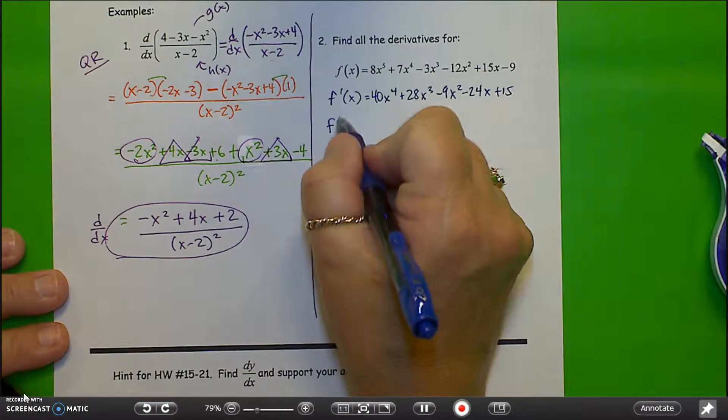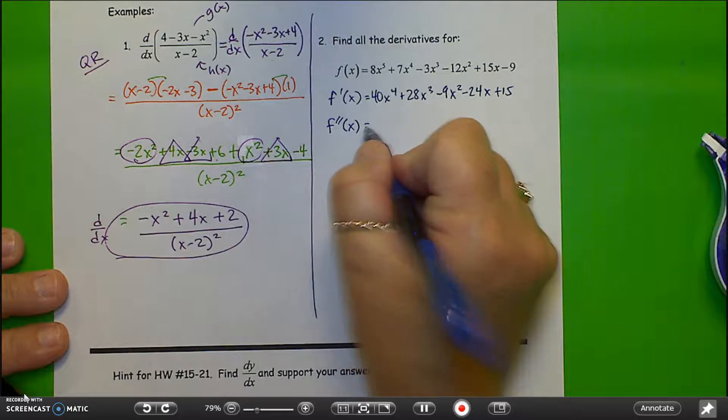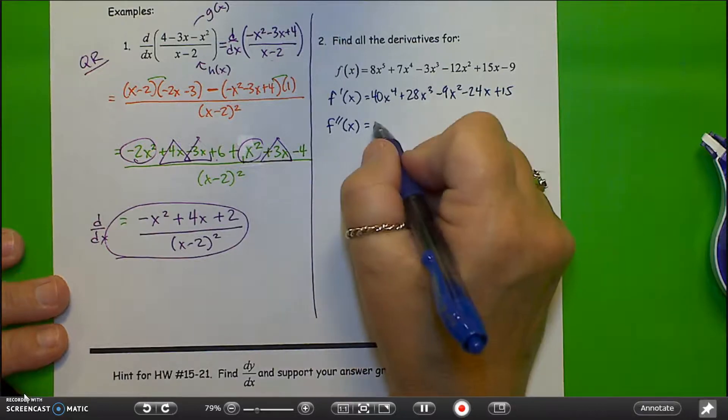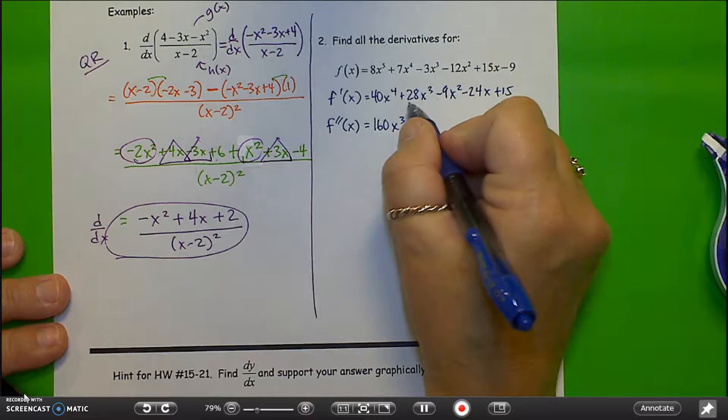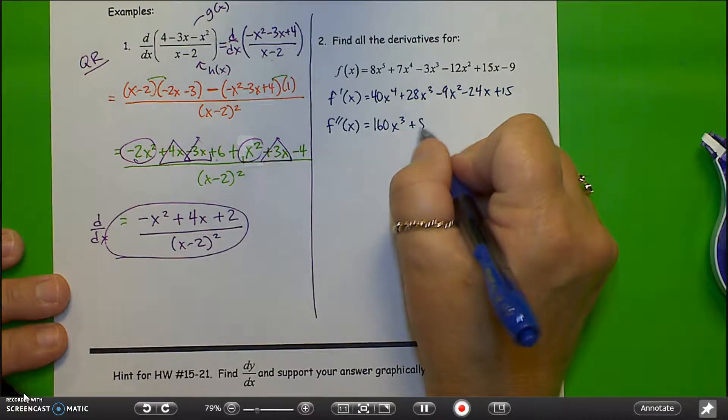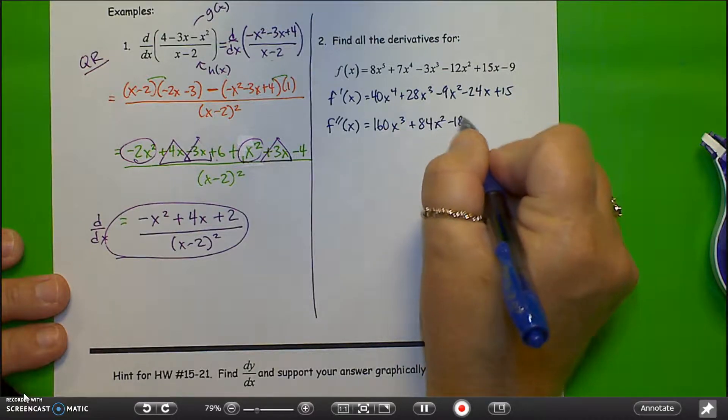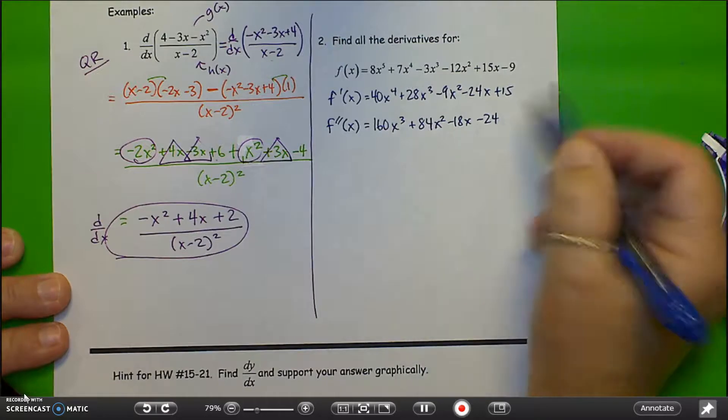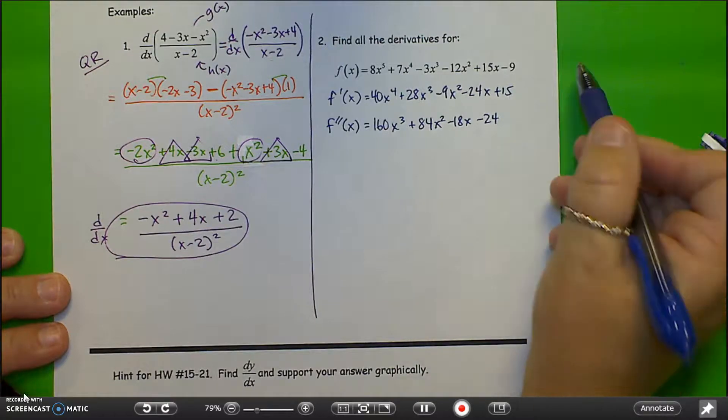Second derivative. We'll denote the second derivative by f double prime. Let's calculate this with the power rule. 160x cubed, plus, what is this, 84x squared, minus 18x, minus 24. That one's gone, because its derivative is 0.